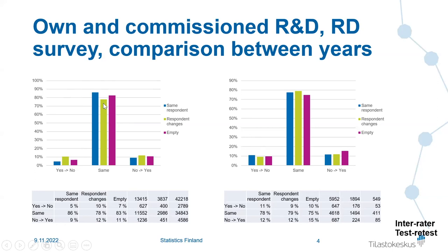In the case of own R&D, there is a small drop when the respondent changes — the next person may think otherwise about whether they have conducted R&D. Interestingly, when we ask about commissioned R&D, the difference between respondent groups is smaller — there is less variation.